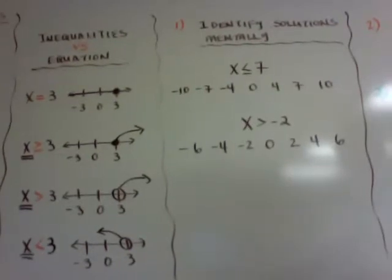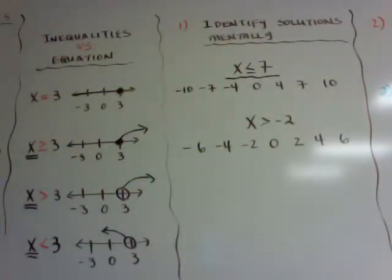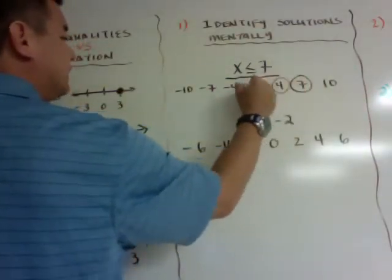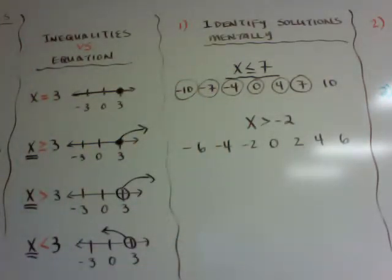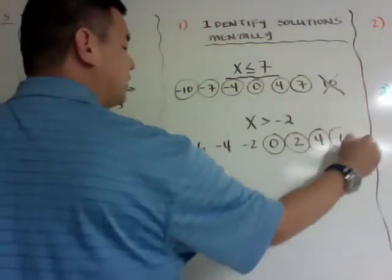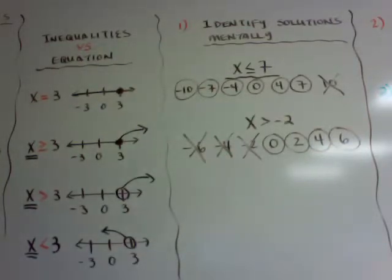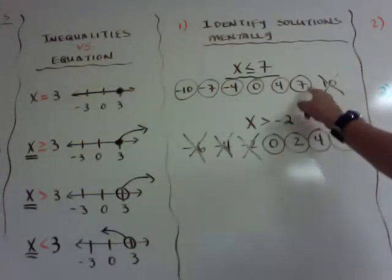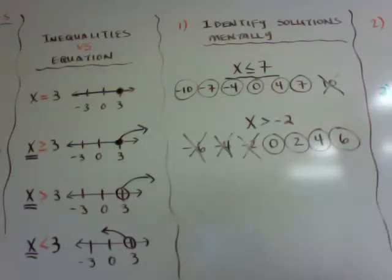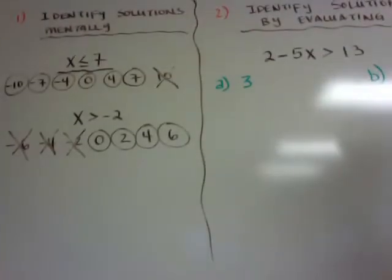Number one — identifying solutions mentally, just by looking at it. If my inequality is x is less than or equal to 7, the ones that are true are 7 and any number less than it, so all of those are solutions. The only one that is not a solution is 10. If it's x is greater than or equal to negative 2, it would be every number greater than negative 2, not including negative 2 itself. So values greater than negative 2 are solutions, but x equal to negative 2 is not, because it must be strictly greater than. That's how you identify solutions mentally — you're just looking at it.